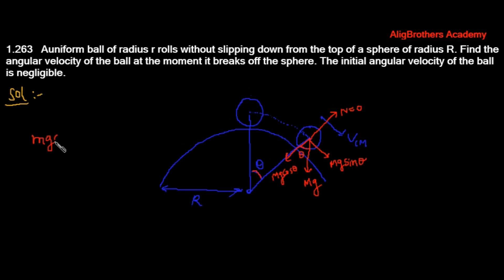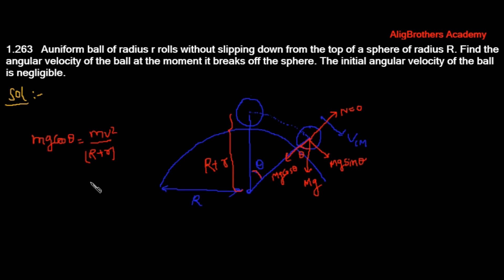We can write: mg cosθ = mv² / (R + r), where (R + r) is the total length from the center of the sphere to the center of the ball. Call this equation number one. From this equation, the mass m cancels out, and we can write cosθ = v² / [g(R + r)].